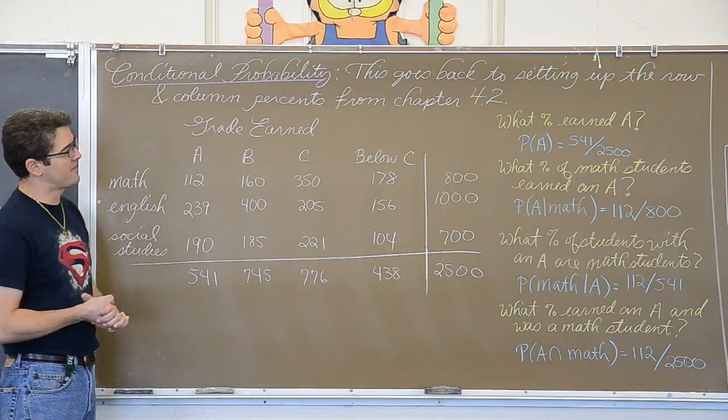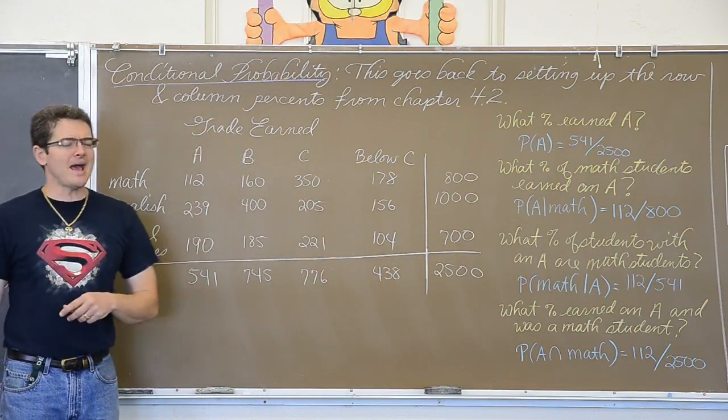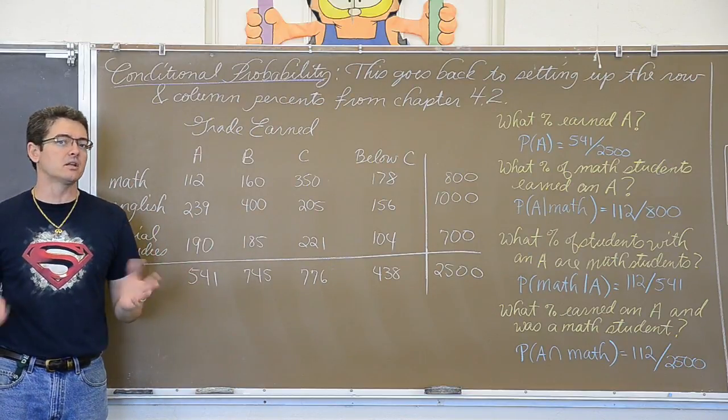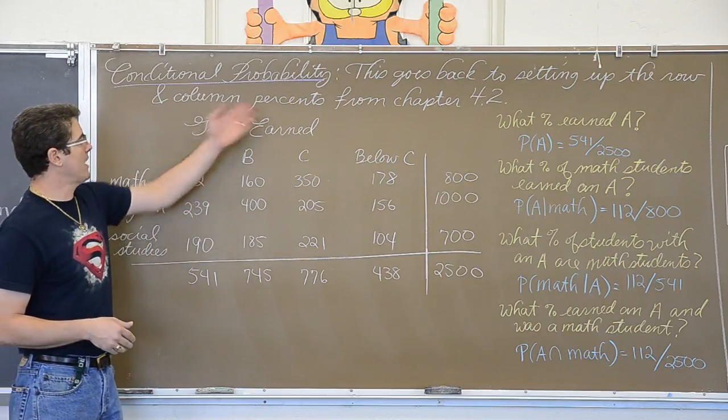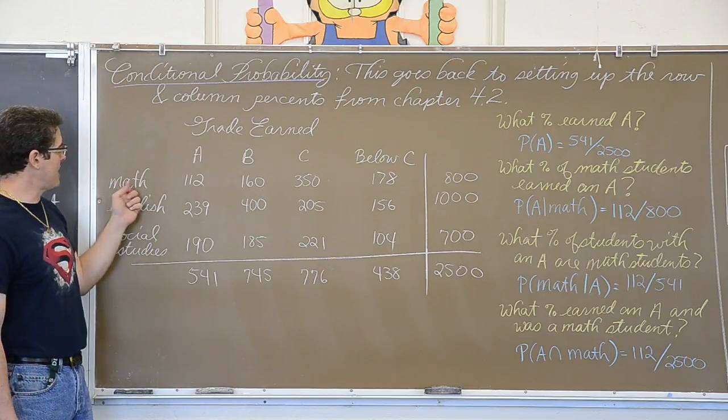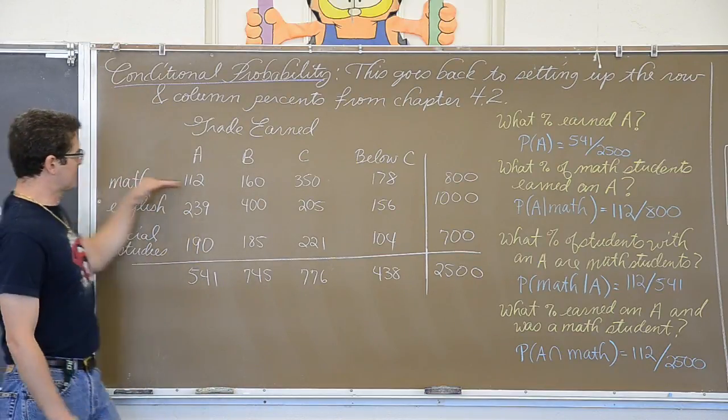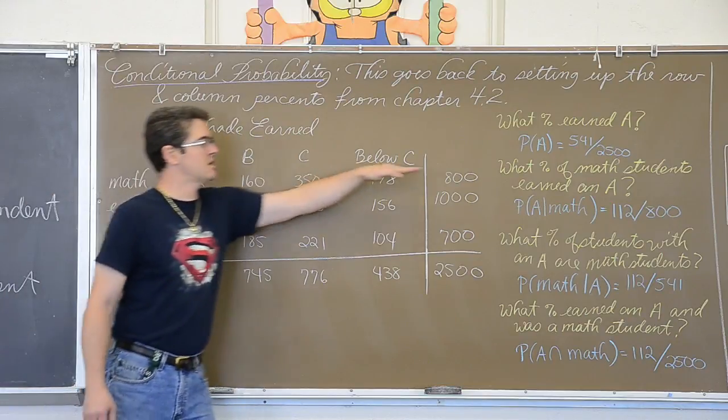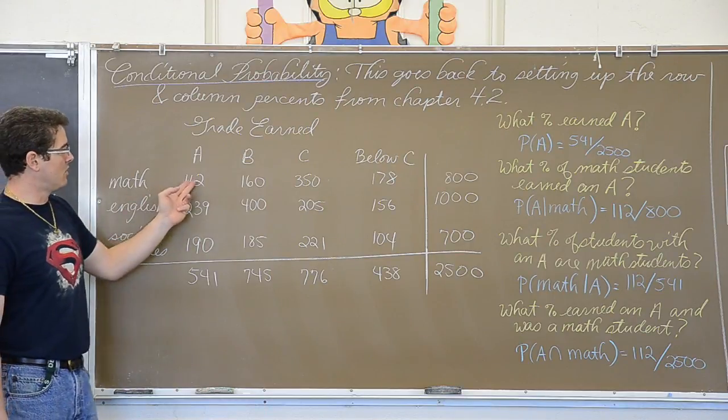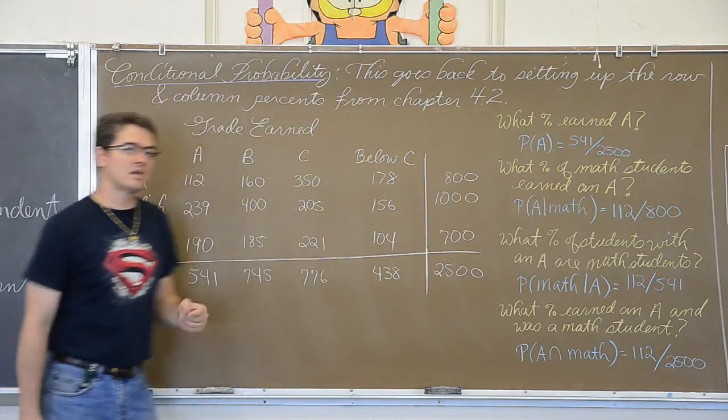What percent of the students have A's in general? No condition given. What percent have A's? Well, that is 541 divided by 2500. Well, what percent of Math students earned A's? Well, now I don't want to even have the student be considered unless they are specifically a Math student. So where is the variable of being a Math student? On the side. So that means that what percent of Math students earned an A, I only care about the students who are in Math classes. That means that we are setting up a row percent. So it is going to be 112, those Math students that got an A, divided by all the Math students of a hundred. That is a row percent.